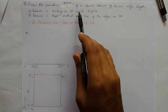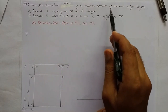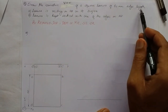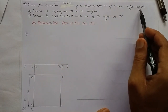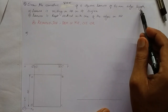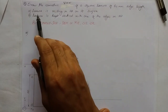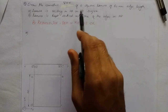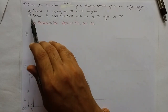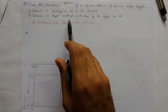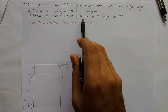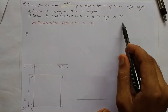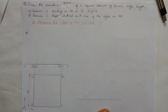Draw the isometric view of a square lamina of 60 mm edge length. There are two subdivisions for this question: the first is when the lamina is resting on HP on its surface, and the second condition is when the lamina is kept vertical with one of the edges on HP. We have to draw the isometric view in these two conditions.